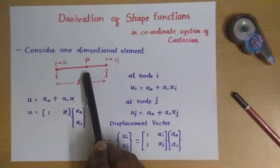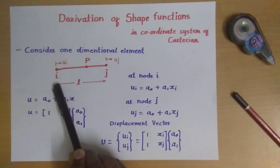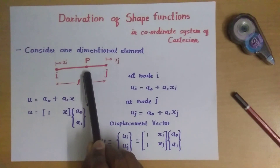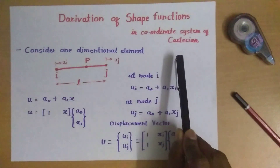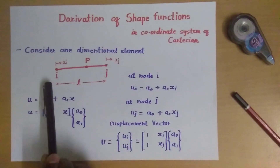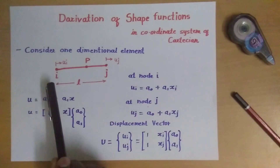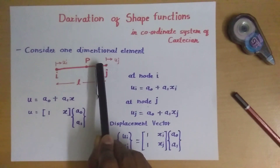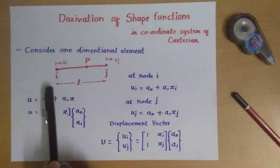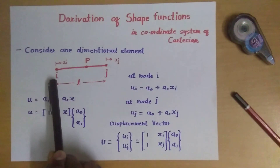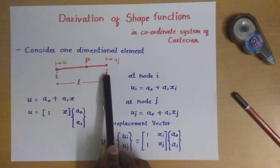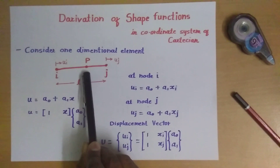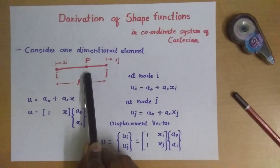Let's consider one point p in between nodes i and j. This whole system is in the Cartesian coordinate system, meaning it has x, y, and z directions, but as it is a one-dimensional element, it has only the x direction. The coordinates are given by xi, xj, and the selected point will be x — so the coordinate of point p will be x.